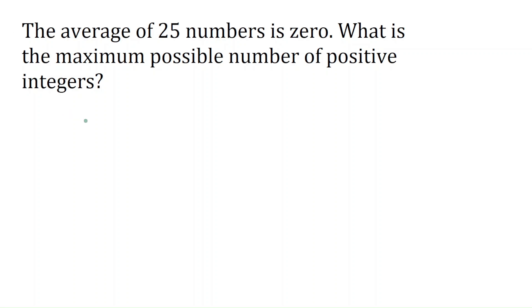Hello friends, let's solve the problem: the average of 25 numbers is zero. What is the maximum possible number of positive integers? How to find the average? What is the formula? Average equals sum of all values divided by total number of values.